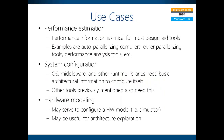There are three major use cases of SHIM. The first one is performance estimation — performance information is critical for most design aid tools, such as auto-parallelizing compilers, other parallelizing tools, and performance analysis tools. The second one is system configuration: the operating system, middleware, and other runtime libraries need basic architecture information to configure themselves. The third one is hardware modeling: SHIM may serve to configure a hardware model like a simulator, and may be useful for architecture exploration.